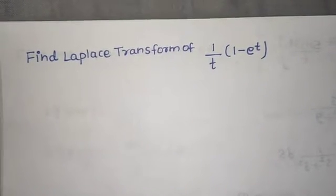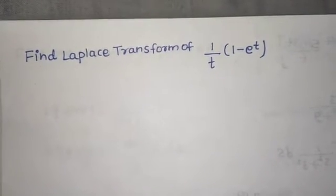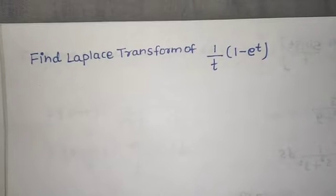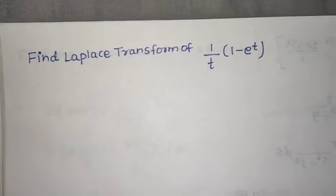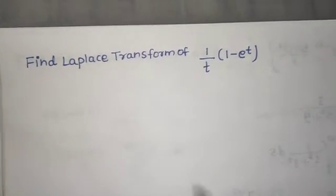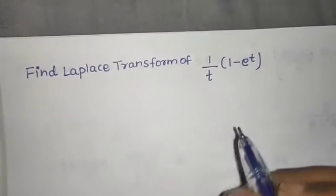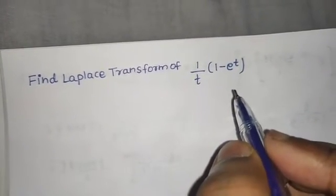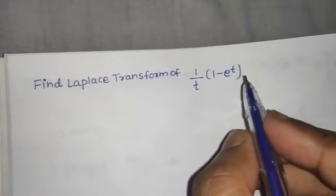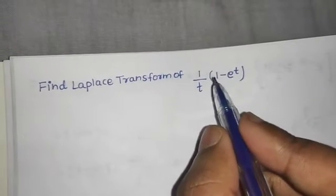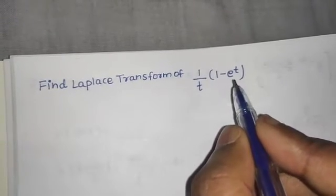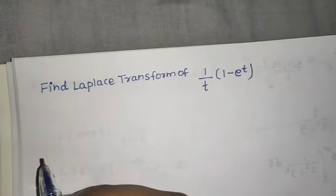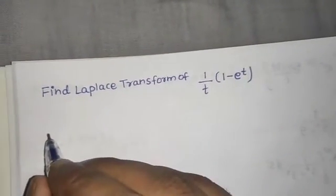We need to find the Laplace transform of (1 minus e raised to power t) divided by t. As usual, we will break the question into two parts: first we will find the Laplace transform of 1 minus e power t, then we will use the division by t property.